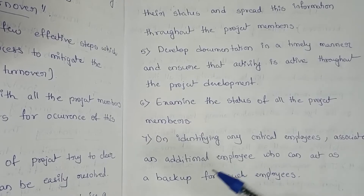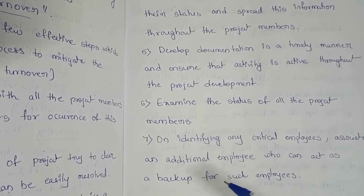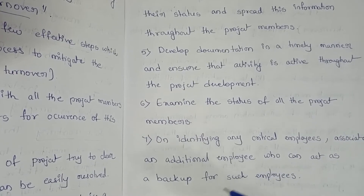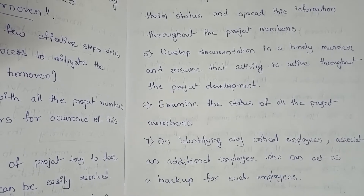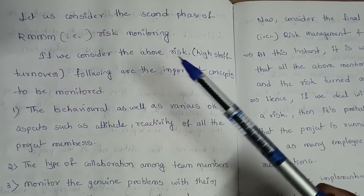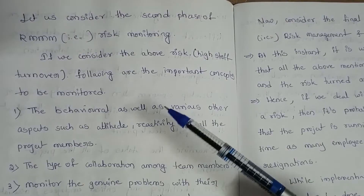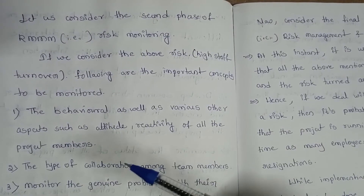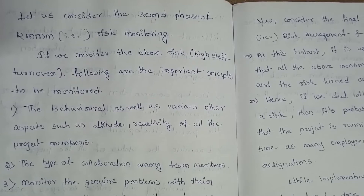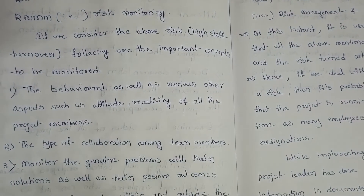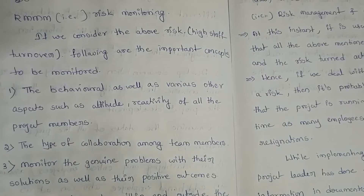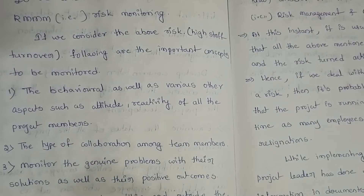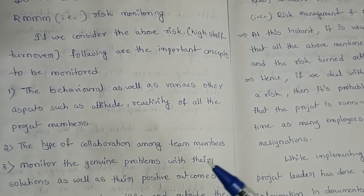For the risk of high staff turnover, in risk mitigation we can simply say we have to maintain a proper document of the employees who are dealing with the particular project. Coming to risk monitoring for this risk, the following are the important concepts to be monitored: behavioral as well as various other aspects such as attitude and reactivity of all the project members, and the type of collaboration among the team members.